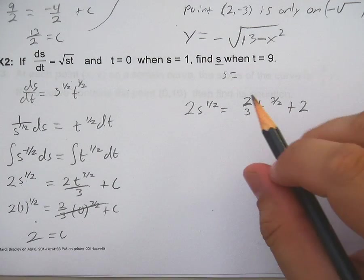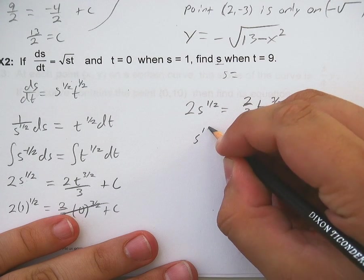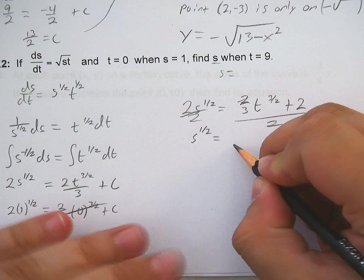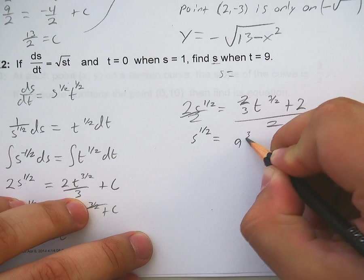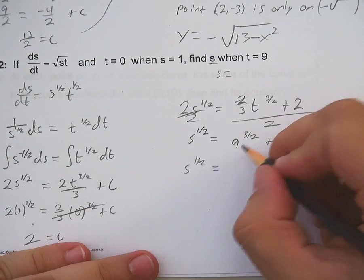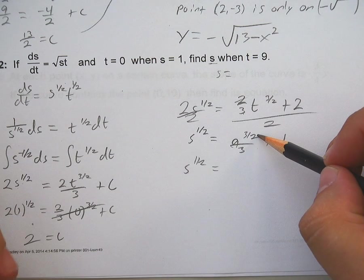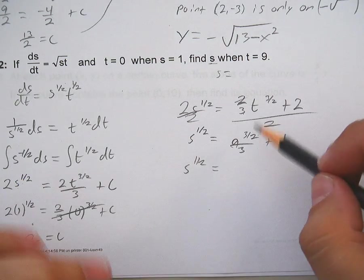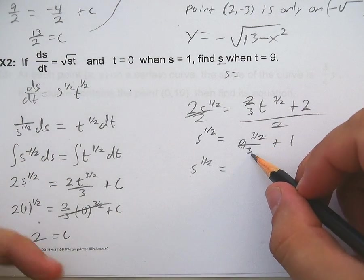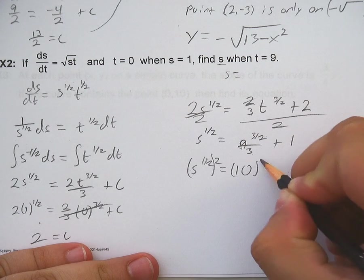But they want us to figure out when t is 9, what is s? So easy enough. Divide by 2 everywhere. You get s^(1/2). And this 2 will go away. Divide by 2. You get t is 9. So 9^(3/2) over 3 plus 1. Square root of 9 is 3 to the 3rd power is 27 over 3 is 9 plus 1 is 10. So squaring this, s is 100.